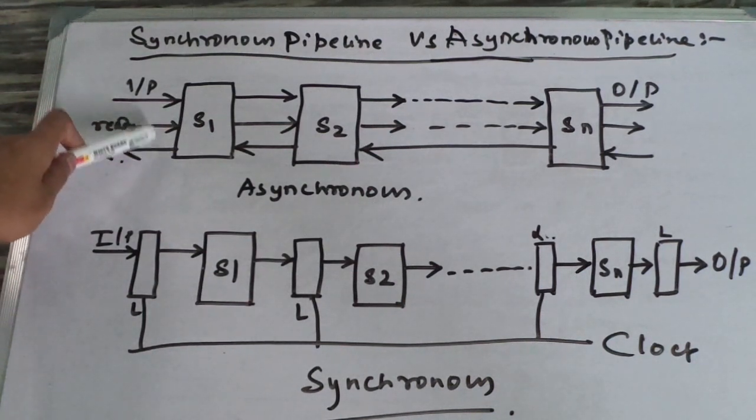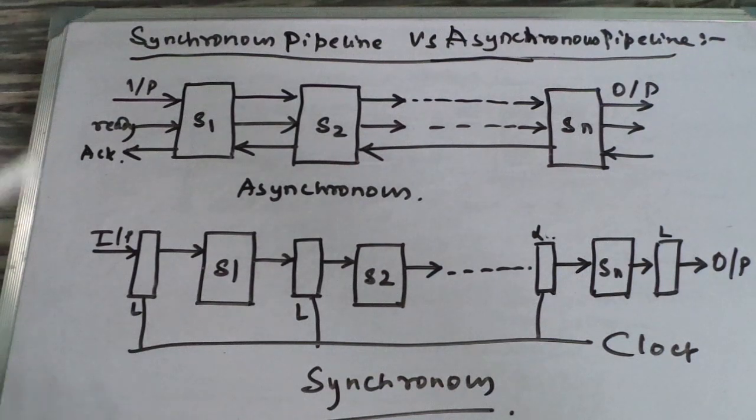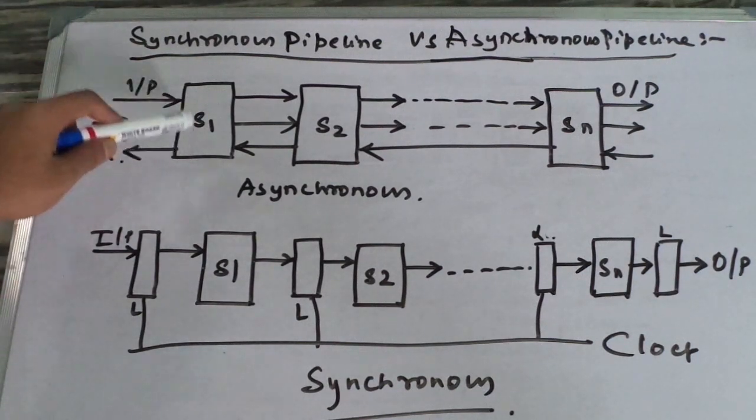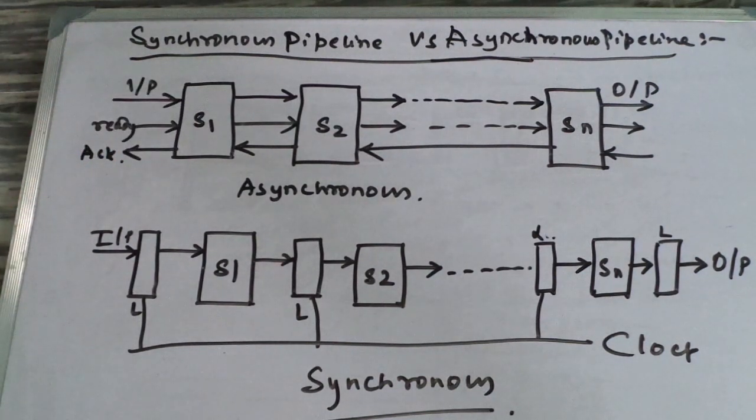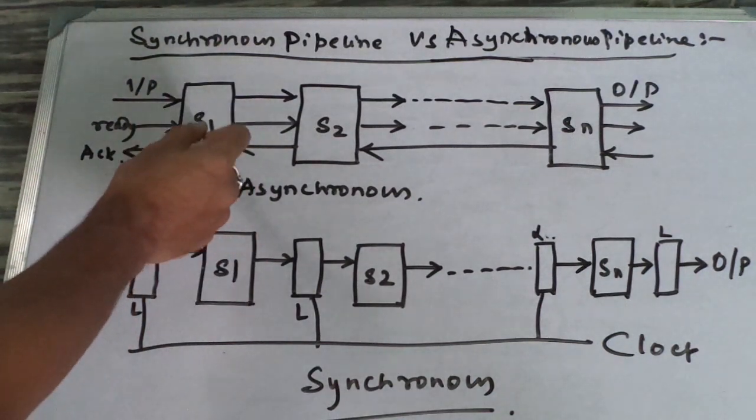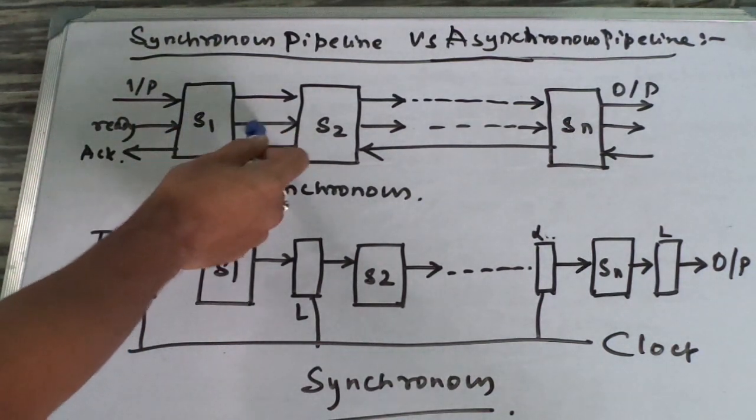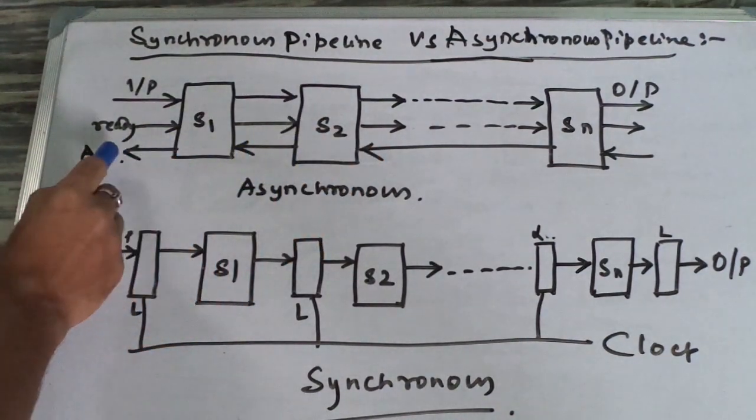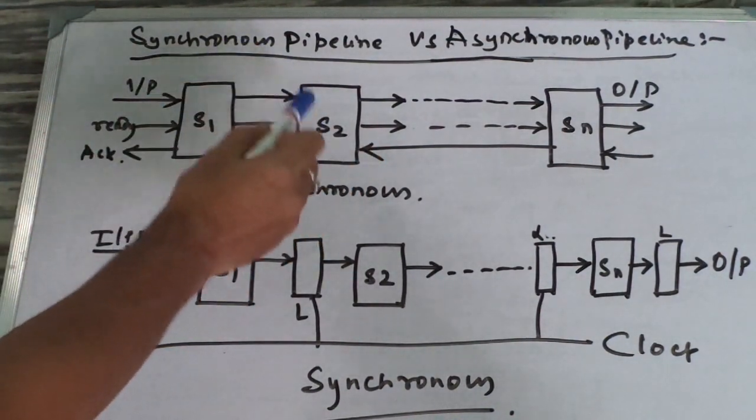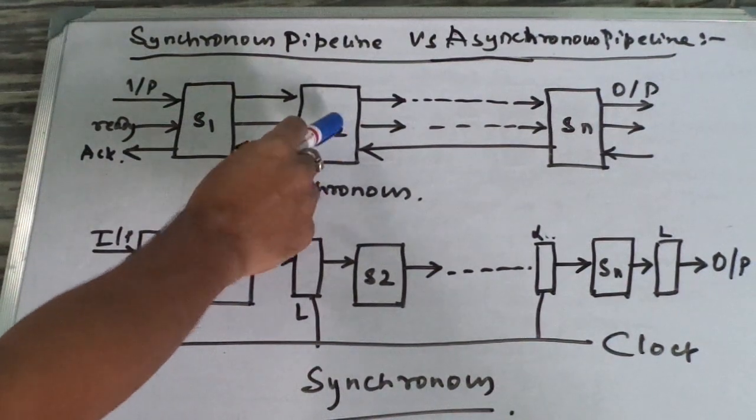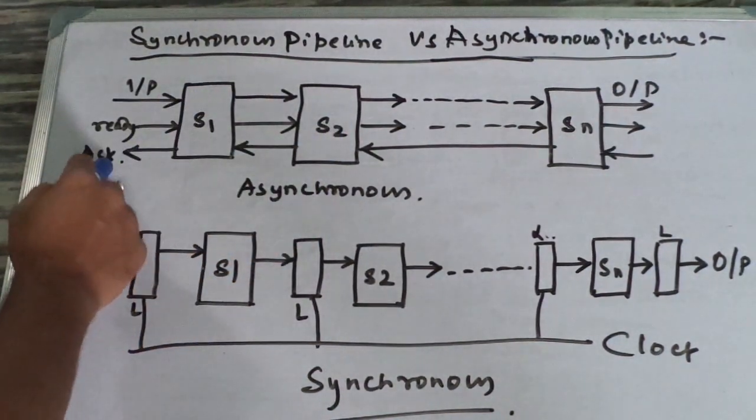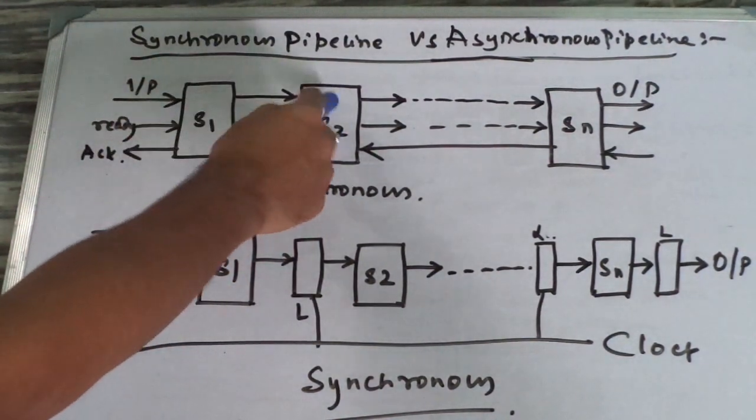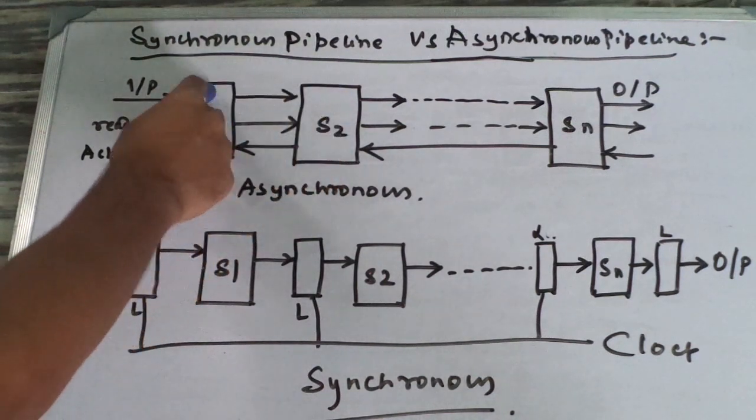The ready gives an option 0 and 1 which sees whether the stage is ready or not. If it passes true, then the data is passed from stage 1 to stage 2. And the acknowledgement line is used to understand whether S2 has got the input given by the previous stage.